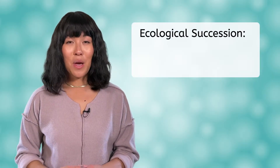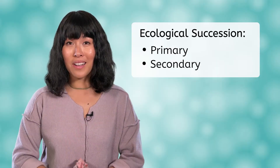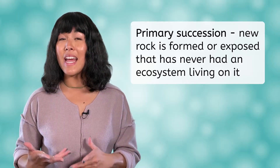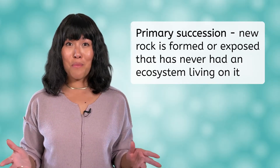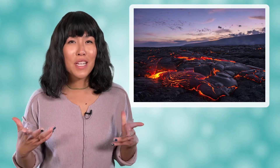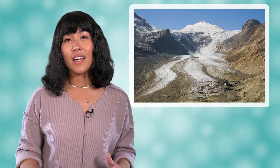There are two main types of ecological succession: primary and secondary. We'll first look at the process of primary succession. This occurs when new rock has formed or been exposed that has never had an ecosystem on it before. New rock is often formed by erupting volcanoes and the subsequent lava flows. Existing bare rock can also be exposed after being buried under glaciers as the climate in an area becomes warmer. It's like starting with a blank slate of life.